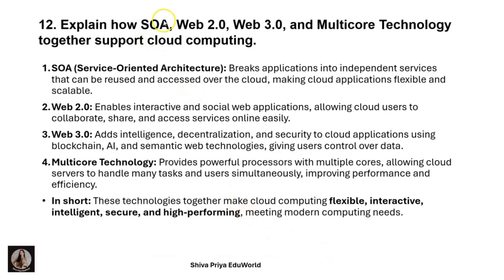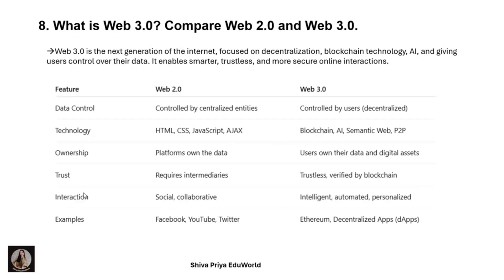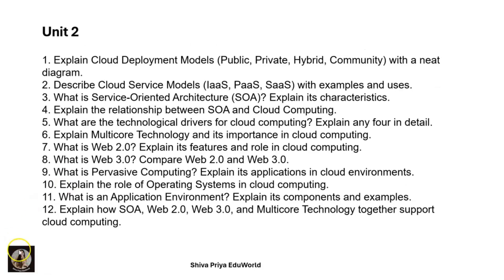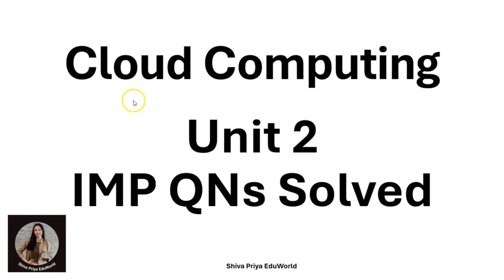The next question asks how SOA, Web 2.0, Web 3.0, and multi-core technologies together support cloud computing. These have all been explained in previous questions in detail. Together, these technologies make cloud computing flexible, interactive, intelligent, secure, and high performing — meeting modern computing needs. This covers all the unit two important questions.